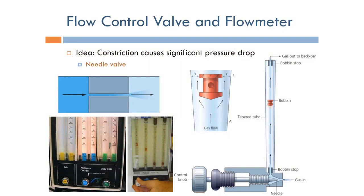The first part that takes care of mixing the oxygen and the nitrous oxide is based on a very simple idea that the constriction causes significant pressure drop. Basically, if you'd like to mix oxygen and nitrous oxide, we can use what's called a needle valve.